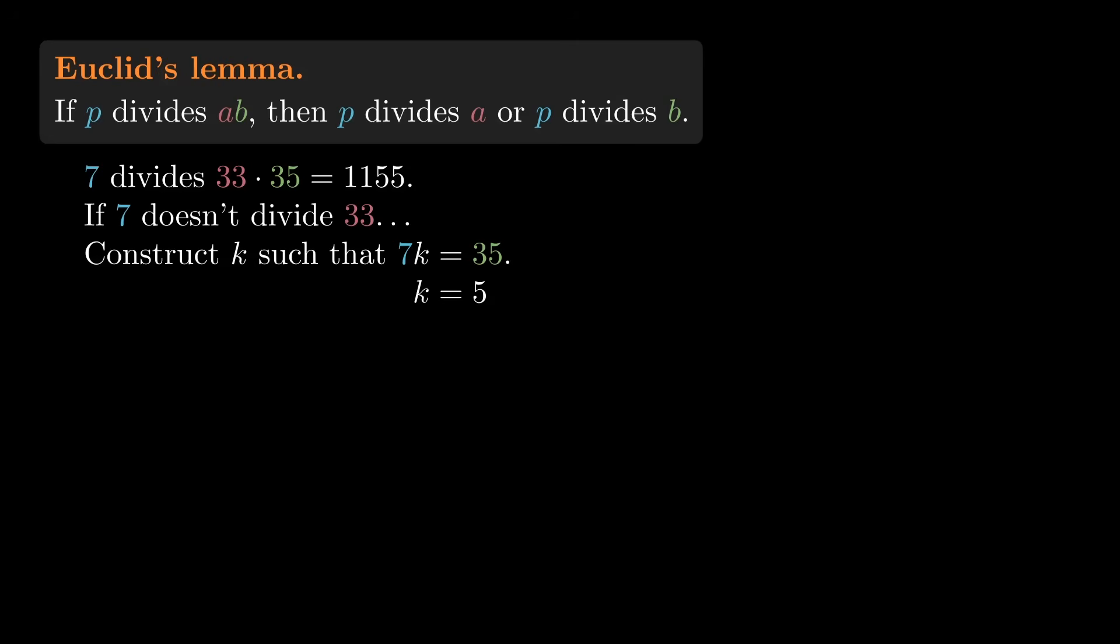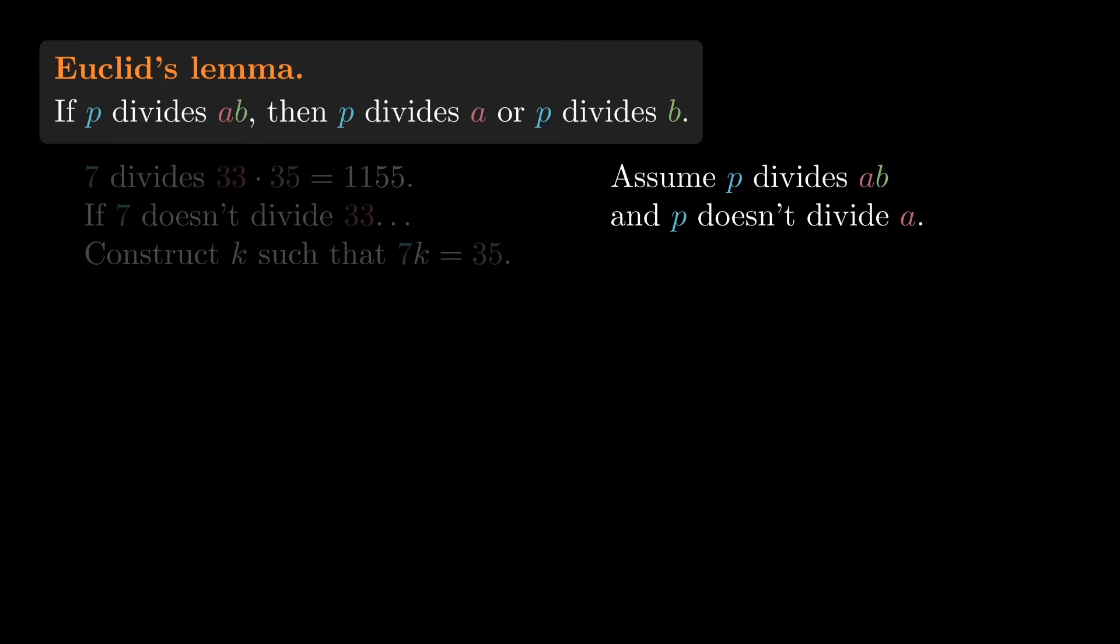But can we do it in general? Assume that p divides ab and that p doesn't divide a. Can we construct a number k such that pk is b?